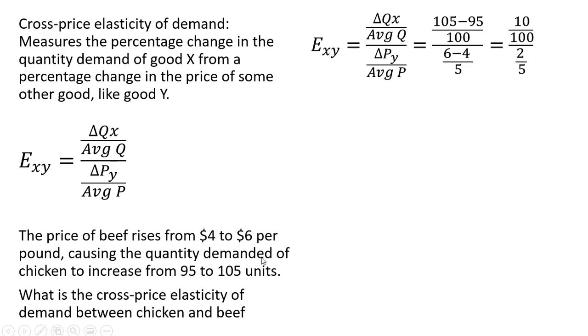As for the price, the price went up by 2 units, 6 minus 4. And the average of those two prices, or the midpoint between 4 and 6, is just $5. So let's simplify further.